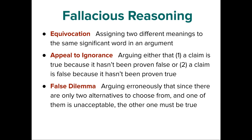Appeal to ignorance is the fallacy of claiming that because something hasn't been proven false, it must be true — or vice versa. Understanding burden of proof is important here: the party making the more controversial or less obviously true claim bears the burden of proof. A lack of evidence is not proof for the opposite. The false dilemma fallacy occurs when someone presents only two options when more exist. A common example: 'Either you're with us or against us' regarding military support — ignoring the option of supporting troops while opposing a particular war.